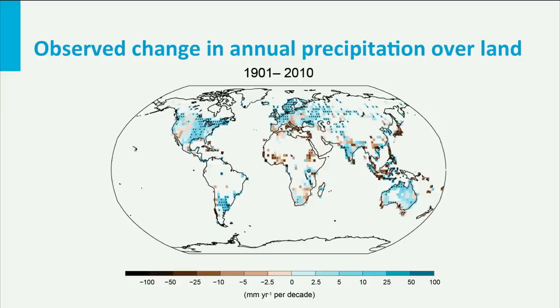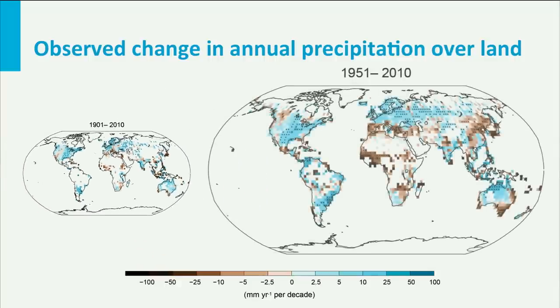We have seen that water vapour in the atmosphere has increased. Can we also expect changes in the amount of liquid water in the atmosphere? Has there been a change in, for instance, the amount of rainfall? On the left we see the average change of rainfall during the last century. In the blue parts on the globe, rainfall is increasing, and in the brown parts it is decreasing. If we zoom in on the last 60 years, we see that these changes in rainfall are happening faster than before. Parts of the world will become wetter, and others drier.